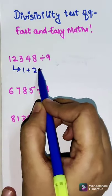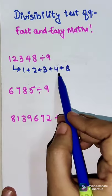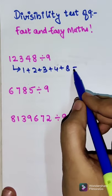For this one, we'll figure out what is 1 plus 2 plus 3 plus 4 plus 8. So 1 plus 2 is 3, 3 plus 3 is 6, 6 plus 4 is 10, 10 plus 8 is 18.